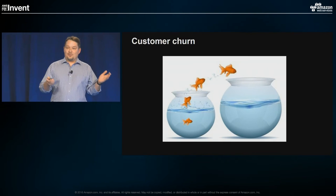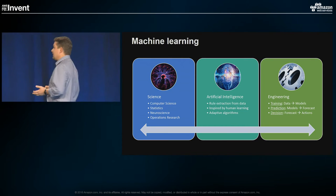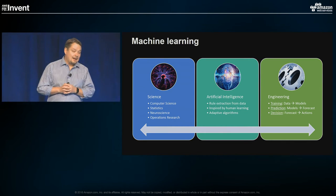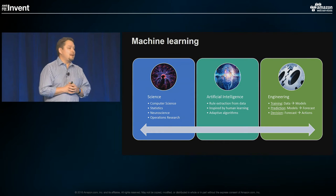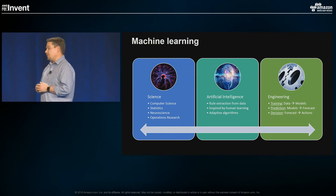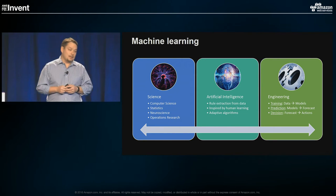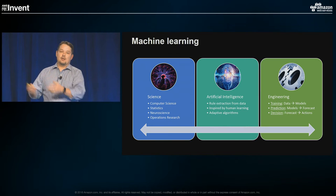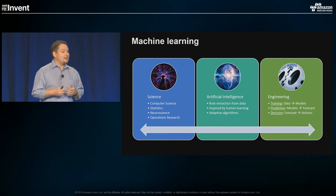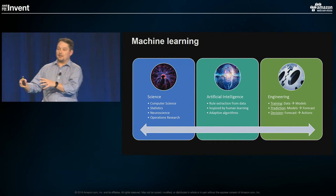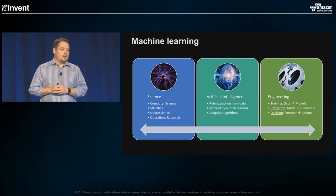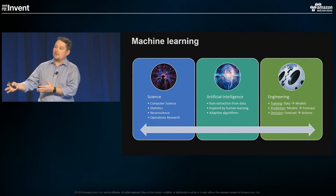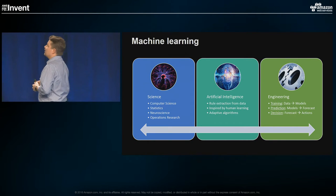We're going to try to solve it with machine learning. Machine learning is a subfield of artificial intelligence, which borrows from many fields in science like neuroscience, operational research, and informatics. What we're seeing recently is that AI and machine learning is really coming into an industrial age, and lots of practical applications are starting to appear. The engineering aspects are becoming very important — we want to not only build a model, but also put it quickly into production. That's one of the things that a service such as Amazon Machine Learning helps you with.